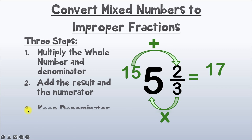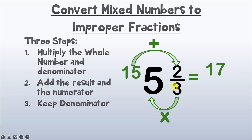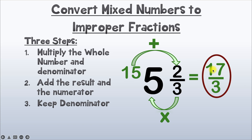Step 3 is to keep our denominator the same. Our denominator was 3, so it's just going to stay as 3. So our final answer is 17 over 3 — the improper fraction for 5 and 2 thirds is 17 over 3.